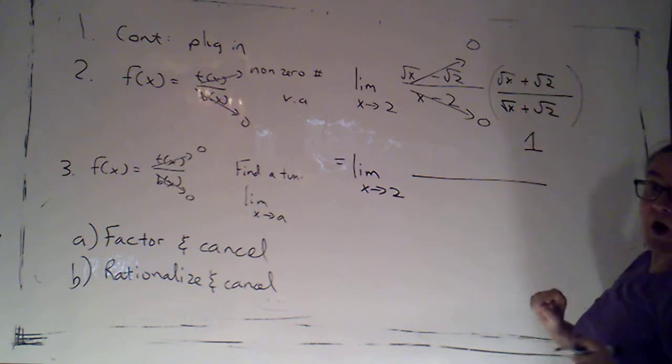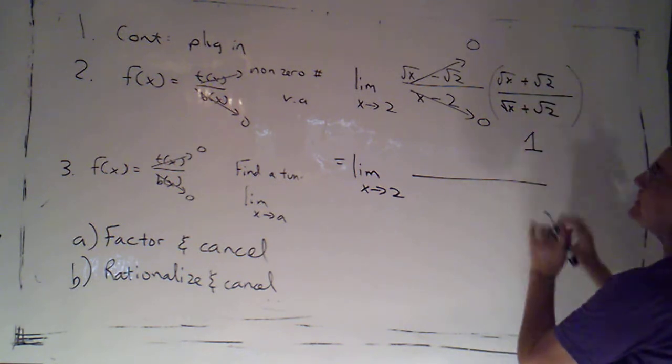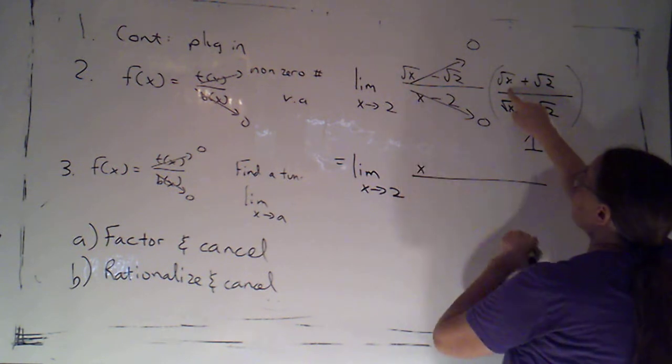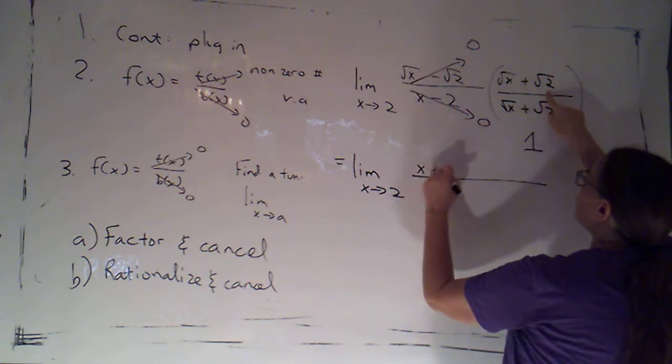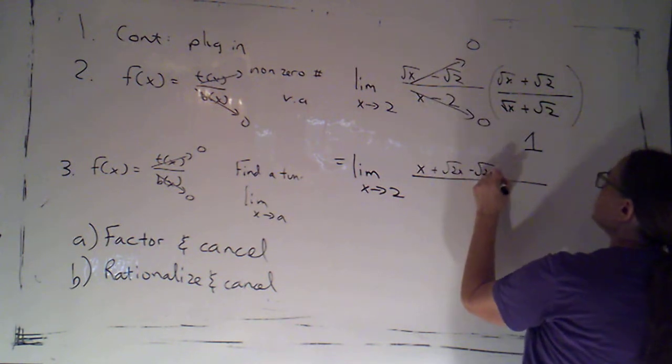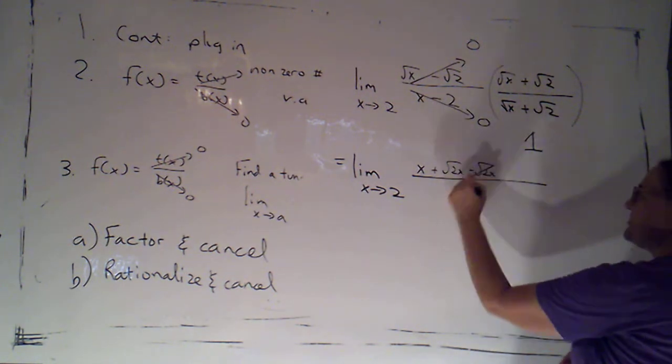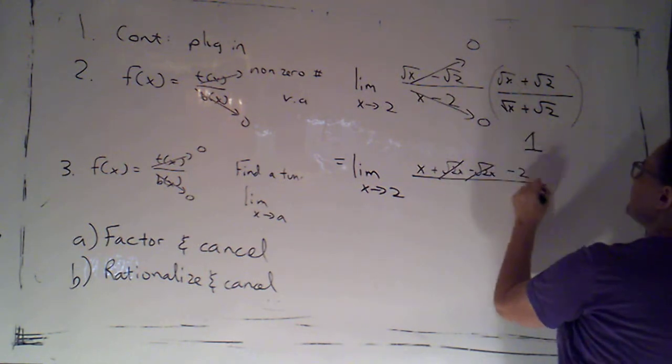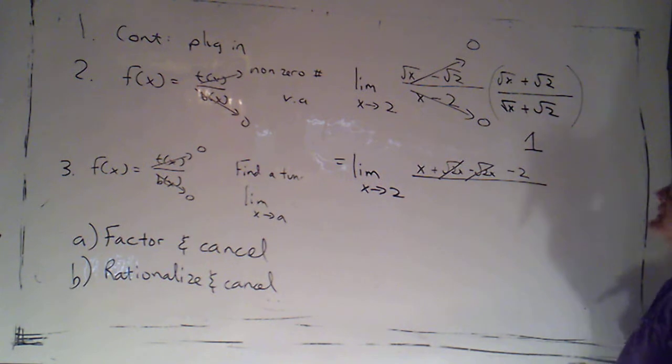Now here's why this works. I'm going to go ahead and foil out the top. Root x times root x is just x. I'm going to get plus root 2x minus root 2x. Those are exact opposites, so they cancel each other out. And then my last terms just give me a minus 2.